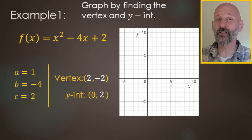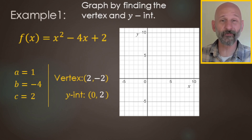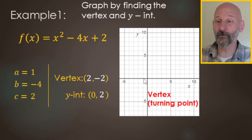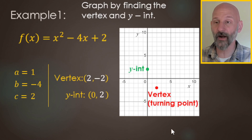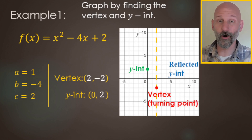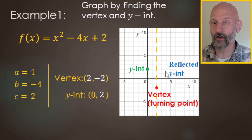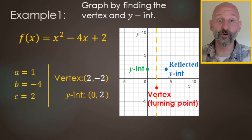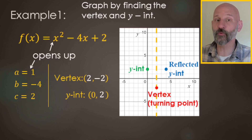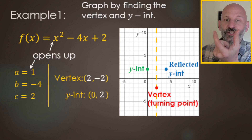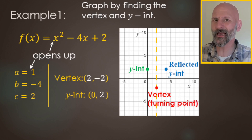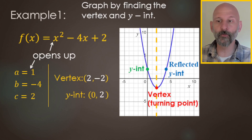Now that we have our vertex (2, −2) and y-intercept at 2, we're ready to graph. The vertex is at 2 on x and −2 on y. The y-intercept is at 2 on the y-axis. We also have our reflected y-intercept: the axis of symmetry goes through the vertex, and the y-intercept is 2 to the left, so the reflection is 2 to the right. The leading coefficient is positive, so the parabola opens up — it's a u-shape.